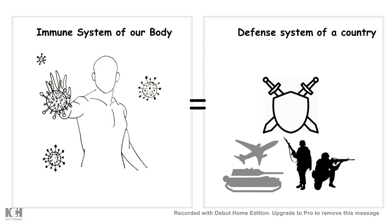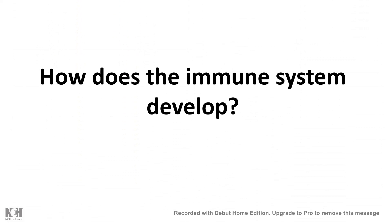The immune system of our body is comparable to the defense system of our country, which protects our body from harmful pathogens and builds up immunity against them. The biggest question that fascinated scientists was: how does the immune system develop so precisely that it has a huge heterogeneity in terms of responses? This is important because pathogens are diverse, requiring several cell types for a counter attack. In this video, I'll be talking about how the development of the immune system happens and what are the major cell types that contribute to our immune system.